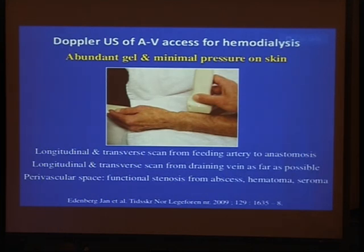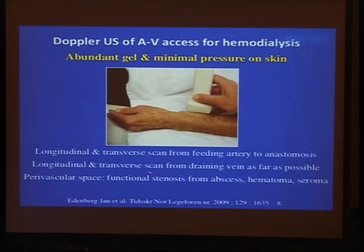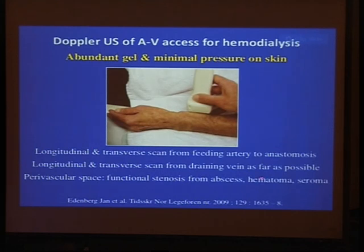How to evaluate the AV fistula? We have to perform Doppler ultrasound of the AV fistula in transverse and longitudinal planes. We have to see the anastomosis of the artery and the vein. We also have to evaluate for associated complications — if there is stenosis, abscess formation around the fistula, very large fistulas, or a hematoma compressing the fistula causing dysfunction and stenosis.